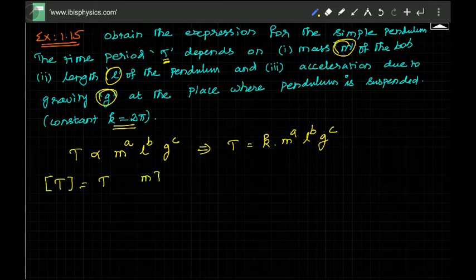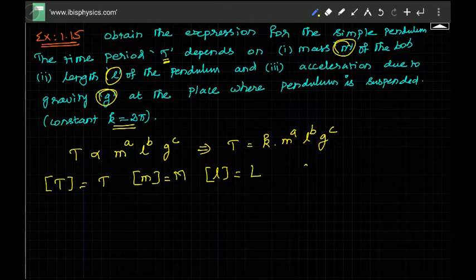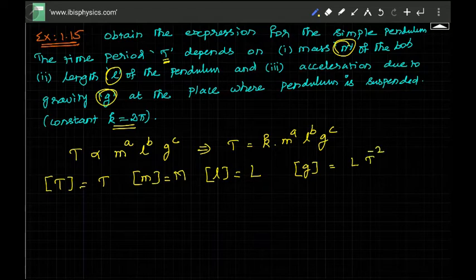The dimensions of mass is M. Dimensions of length is L. Then dimensions of g - g is gravity which is acceleration. Acceleration is change in velocity by time. Velocity is LT^-1 by time is T, so it is going to be LT^-2. Substituting all these over here.